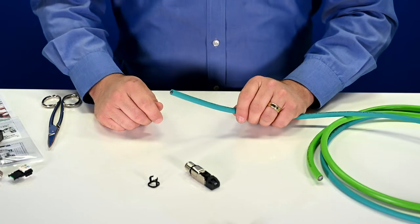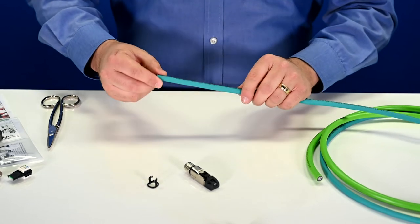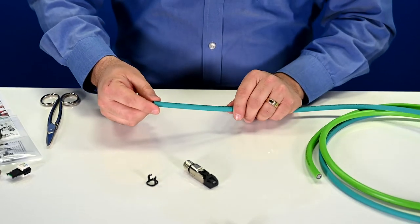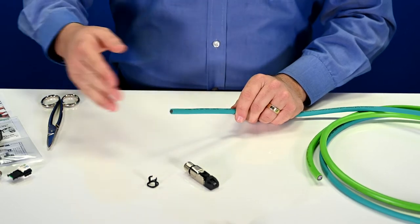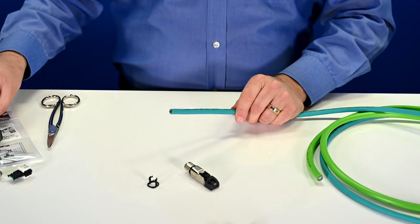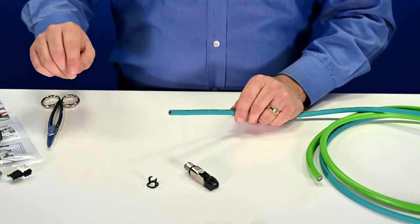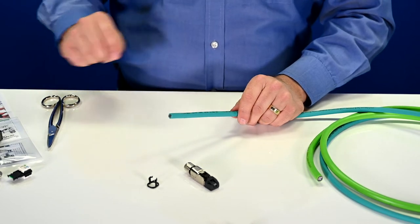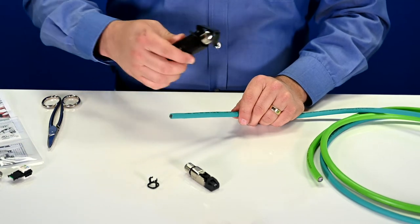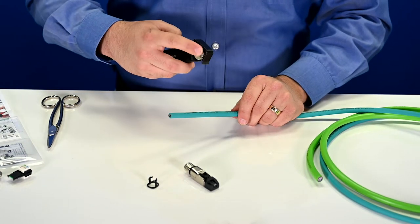The first step in attaching our connector is to prepare the cable. I've brought one of Lutza's Ethernet cables with me here. The first step is going to be to strip the cable jacket, and you'll see how we prepare the cable to go into the connector. One thing before we start, always make sure that you don't cut too deep into that jacket, or else you'll damage the shield underneath. That's why I always recommend a cutting tool that has an adjustable blade depth.